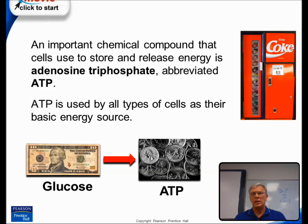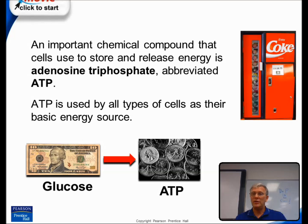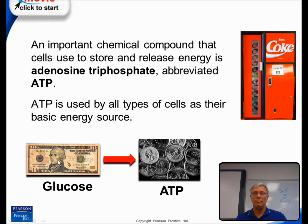I like to use the analogy of a drink machine. If you have a $10 bill and want to go to the drink machine, do you have enough money to buy a Coke? The answer obviously is yes — you have plenty of money. However, it's not in the correct form. You need to convert that $10 bill into quarters. Quarters would allow you to purchase the drink. So in living cells, glucose would be like our $10 bill that needs to be converted into quarters, which would be analogous to ATP in the cells. ATP is the energy currency in living cells.